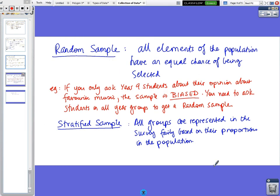And the last bit is types of samples. You can have a random sample. You can actually have a biased sample as well. We'll come to that in a sec. Or you can have what's called a stratified. So in a random sample, all elements of the population have an equal chance of being selected.